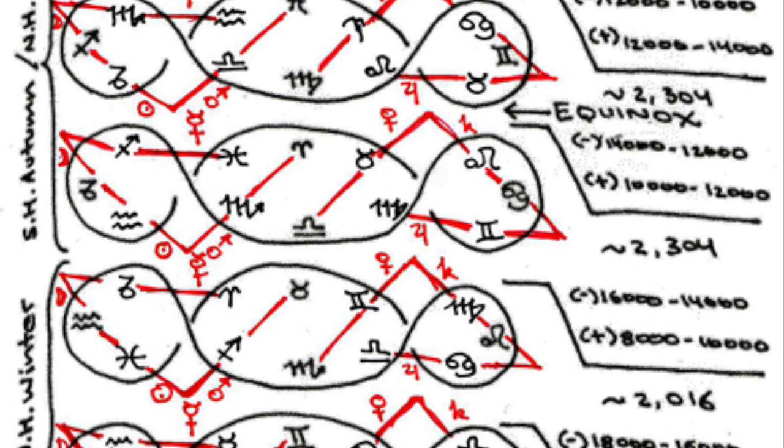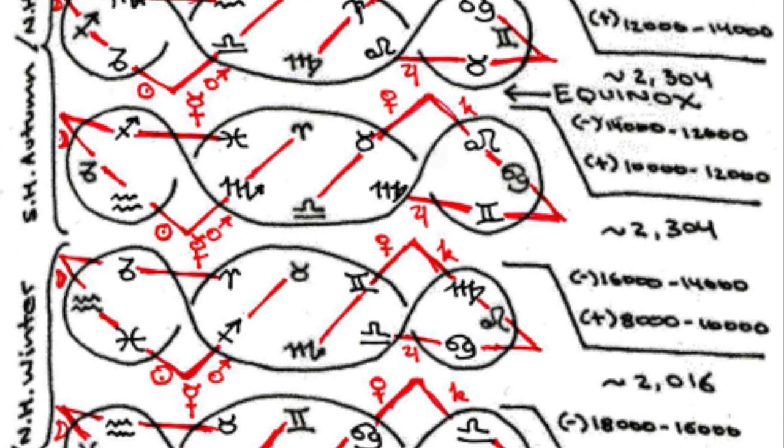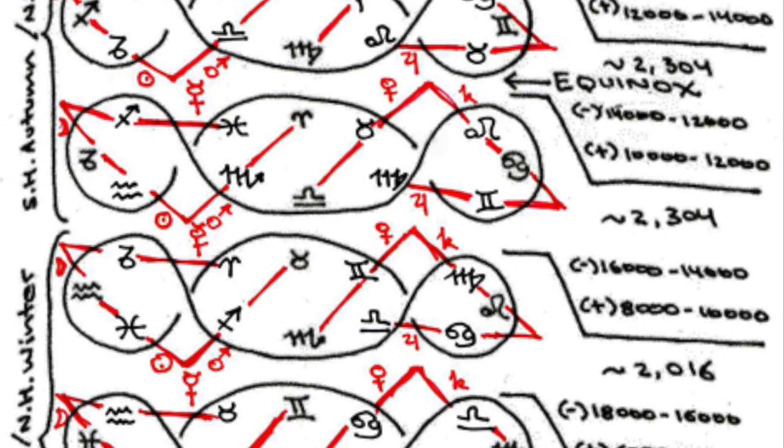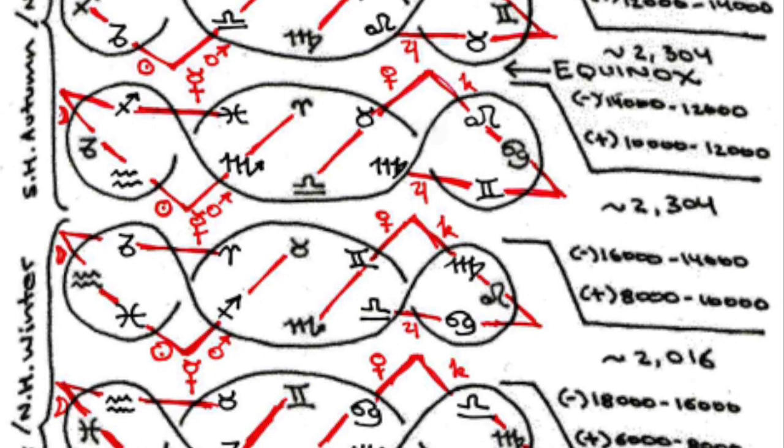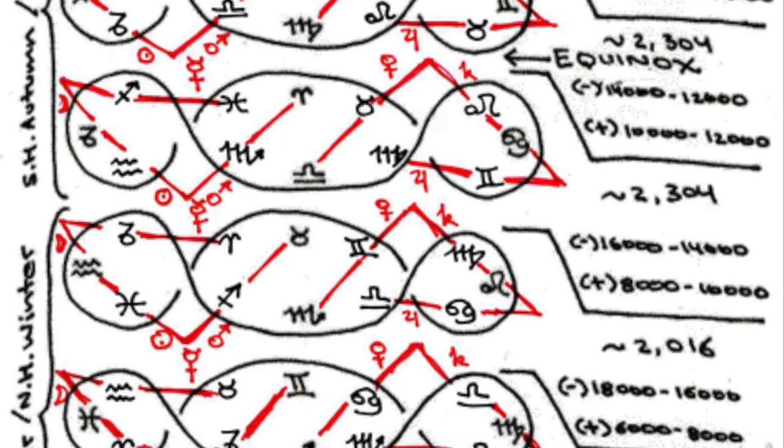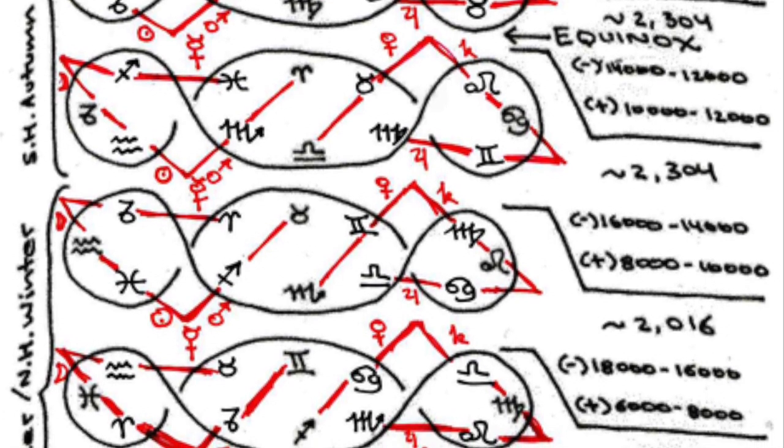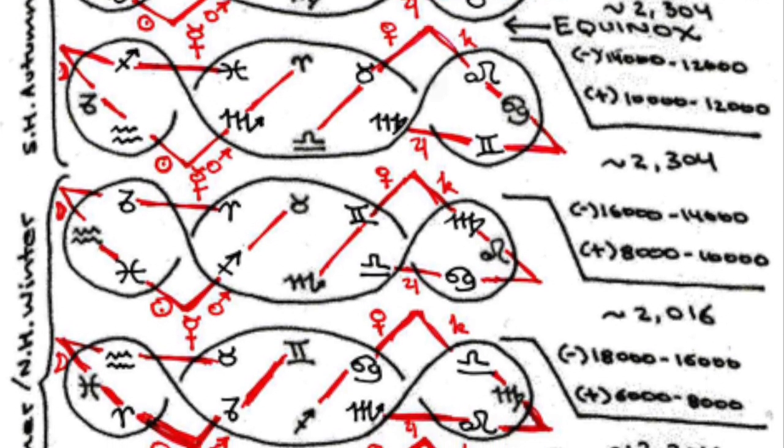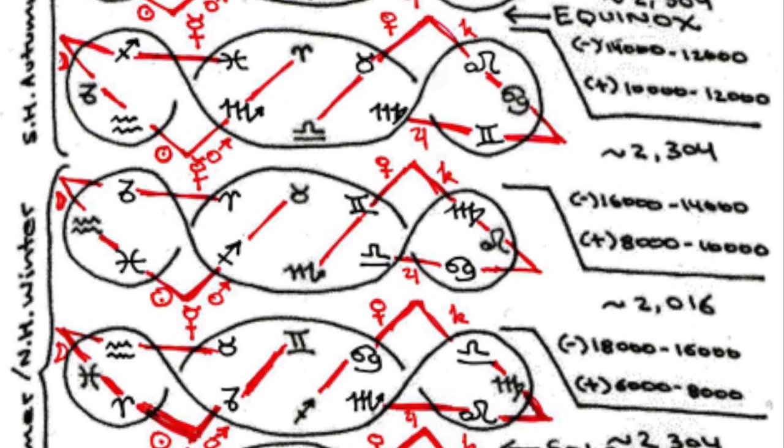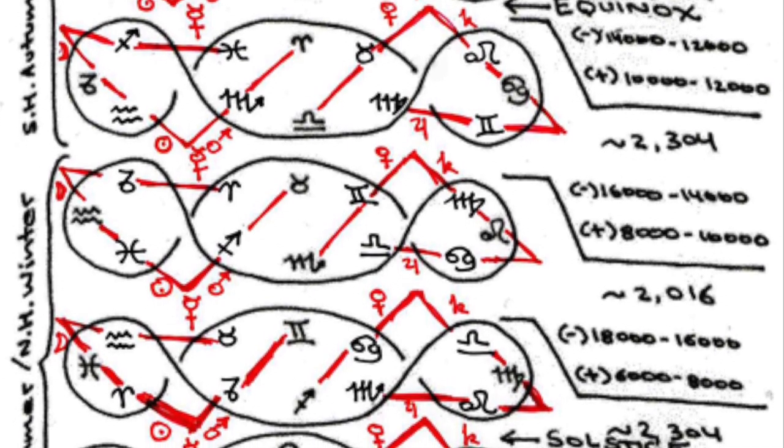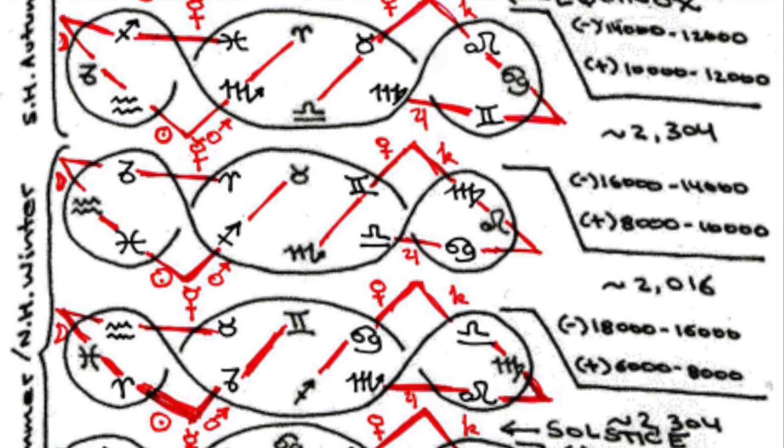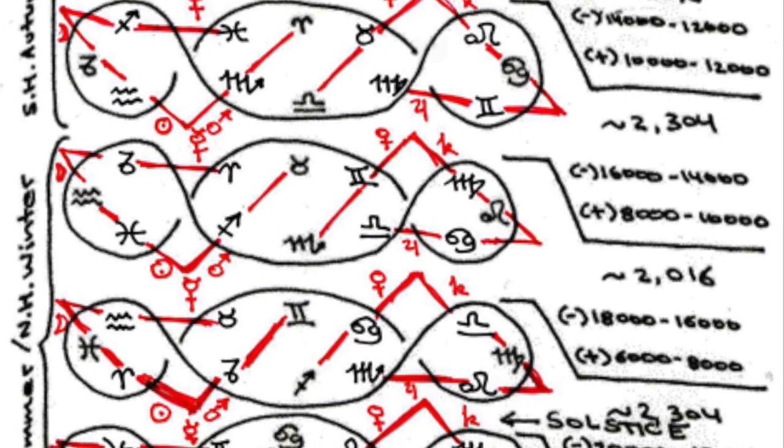Much later, by way of a new Roman dating system, the notional year zero was designated A.D. one. Source: Gardner, Lawrence, Bloodline of the Holy Grail, Chapter 5, Section 2.